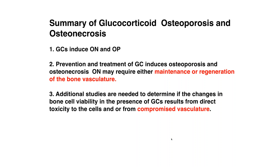In summary, glucocorticoids rather rapidly cause osteoporosis and are also involved in osteonecrosis, as they definitely reduce bone vascularity. Prevention of glucocorticoid-induced osteoporosis and possibly osteonecrosis may actually require maintenance or regeneration of that bone vasculature, because osteoblasts need that vasculature to form bone. We need additional studies to determine if changes in bone cell viability in the presence of glucocorticoids result from direct toxicity to the cells or from compromised vasculature.